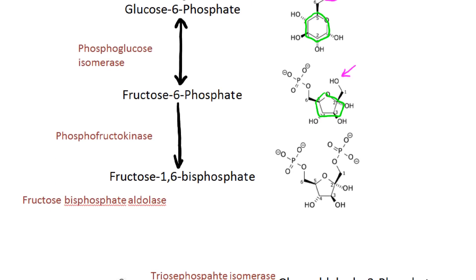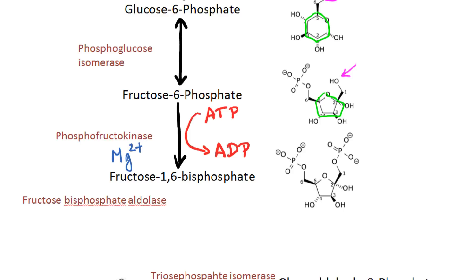The next step is going from fructose 6-phosphate to fructose 1,6-bisphosphate. In this reaction, ATP is converted to ADP and is facilitated through a very important enzyme called phosphofructokinase. Magnesium is a cofactor in this reaction. Here you can see that on this carbon a phosphate group has been added.